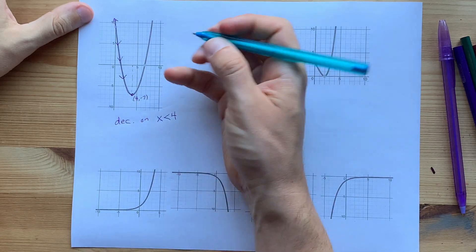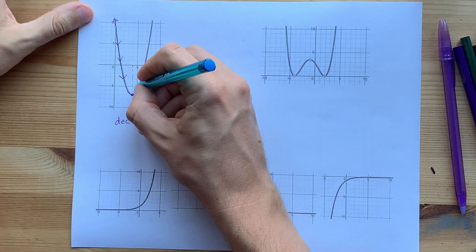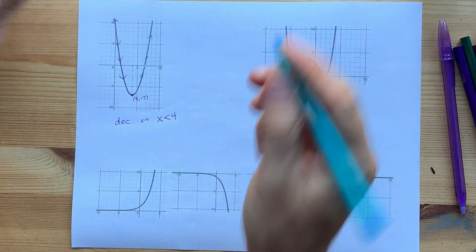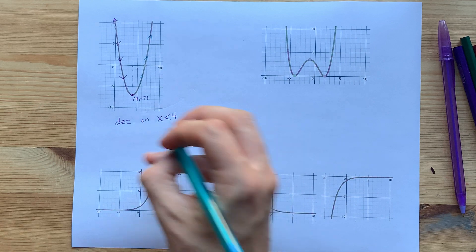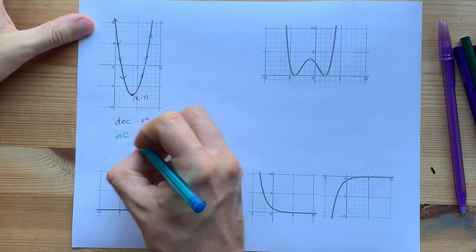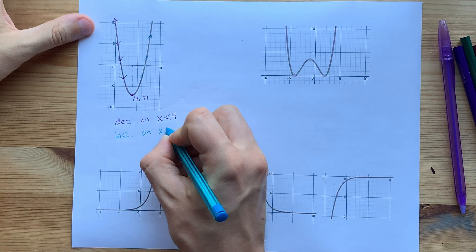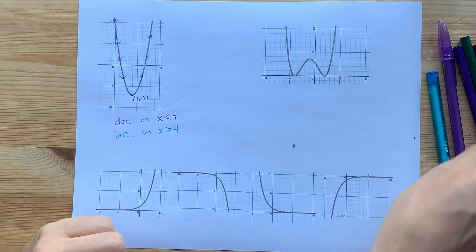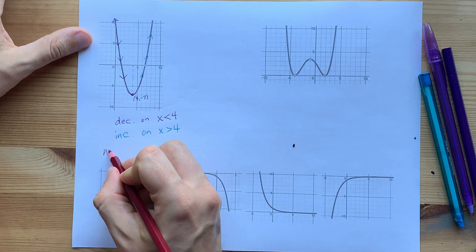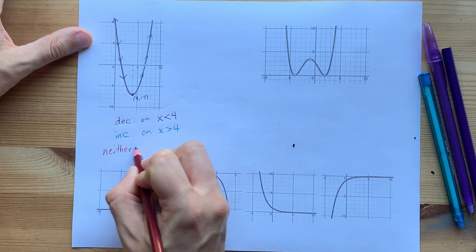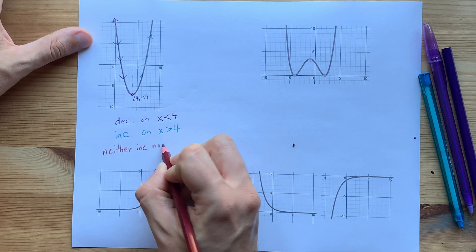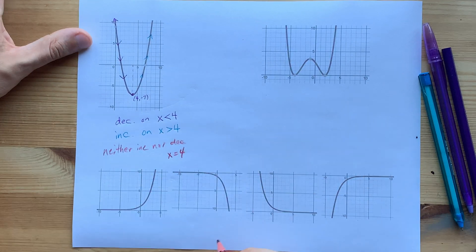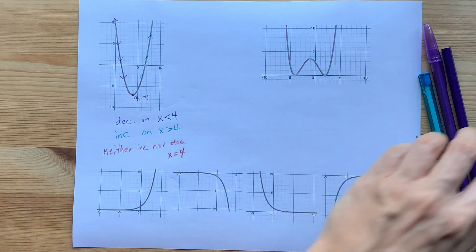On the other hand, on the other side of 4, my pencil is now moving upward. We'll say that the function is increasing when x is greater than 4 — that is, to the right of 4. It is actually neither increasing nor decreasing at x equals 4, just in case your teacher is going to ask you that.